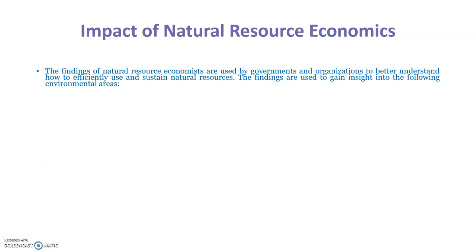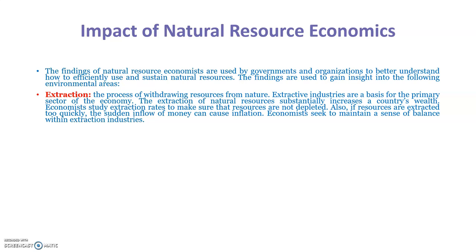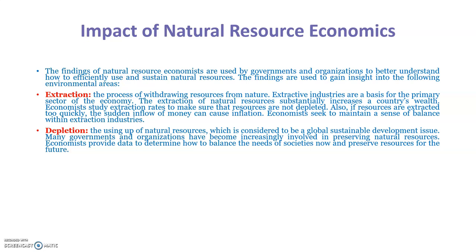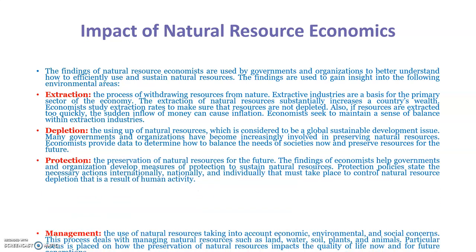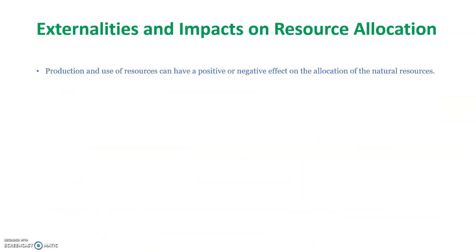The findings of natural resource economics are used by governments and organizations to better understand how to efficiently use and sustain natural resources. The findings provide insight into the following environmental areas: extraction, depletion, protection and management, externalities, and impacts on resource allocation. Production and use of resources can have a positive or negative effect on the allocation of natural resources.